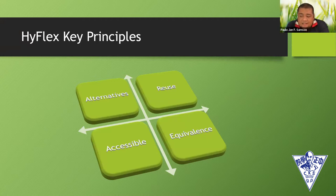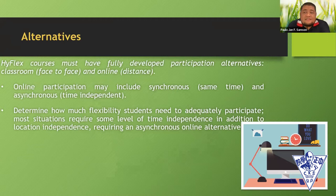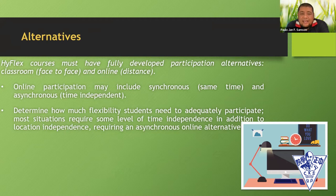Choices should lead to equivalent learning — achieving the same student learning outcomes, though not necessarily through identical instructional objectives. All options should help students meet the same fundamental set of learning objectives for a course. HyFlex courses must have fully developed participation alternatives: either classroom face-to-face, or online/distance. Online participation may include synchronous and asynchronous modes. This determines how much flexibility students need to adequately participate at different levels of distance, location independence, and asynchronous online activity.